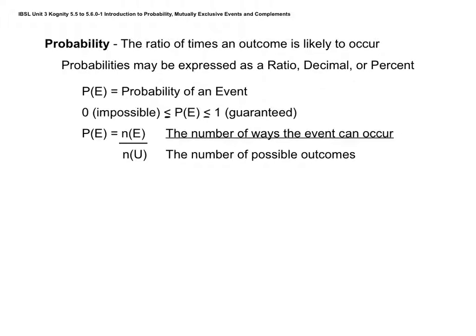The notation P(E) represents the probability of an event happening. If the probability is zero, that means it's impossible; if it's one, it's guaranteed. All probabilities should be between zero and one. To find the probability, we look at how many different ways that event can occur divided by n(U) — the number in the universal set, or the number of possible outcomes in the situation.